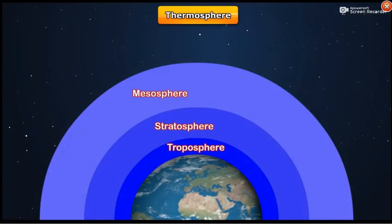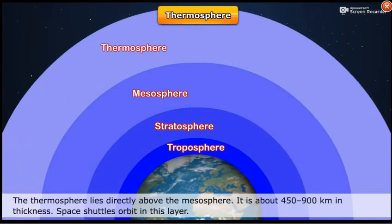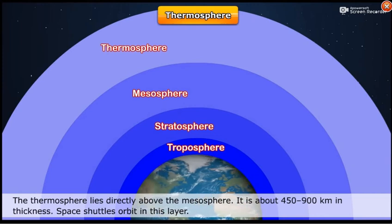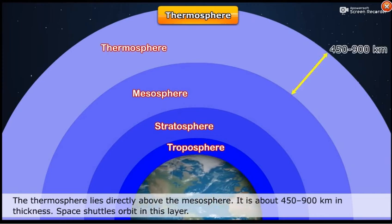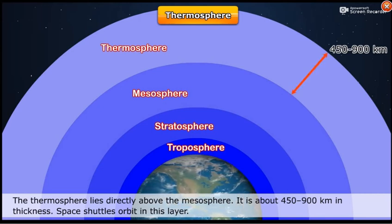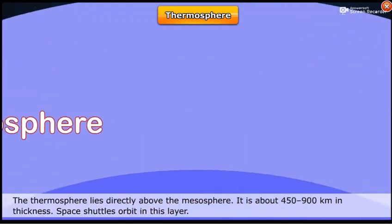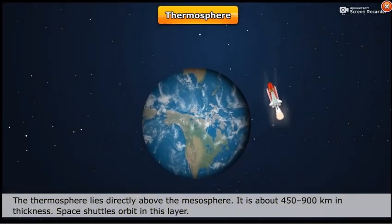Thermosphere. The thermosphere lies directly above the mesosphere. It is about 450 to 900 km in thickness. Space shuttles orbit in this layer.